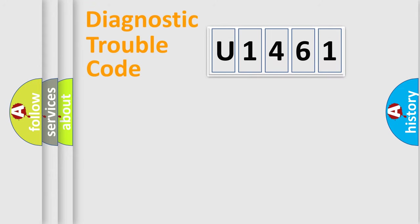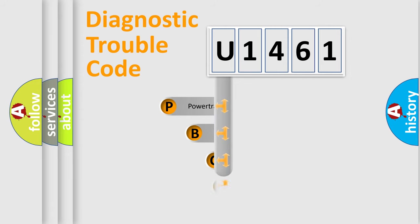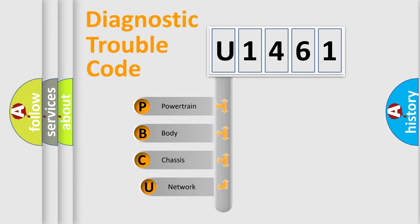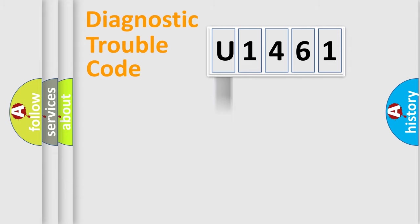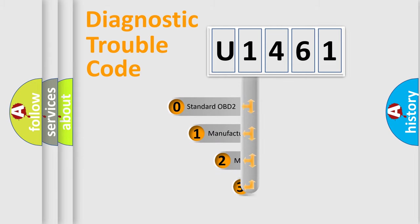Let's look at the history of diagnostic fault code composition according to the OBD2 protocol, which is unified for all automakers since 2000. We divide the electric system of an automobile into four basic units: Powertrain, Body, Chassis, and Network. This distribution is defined in the first character of the code.